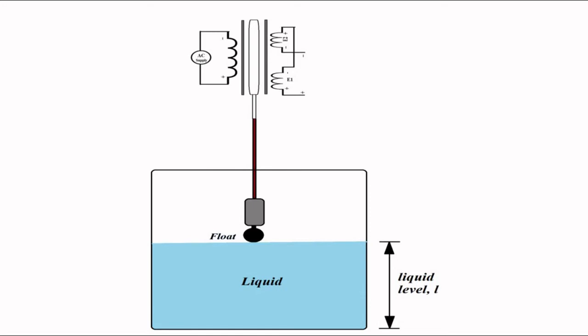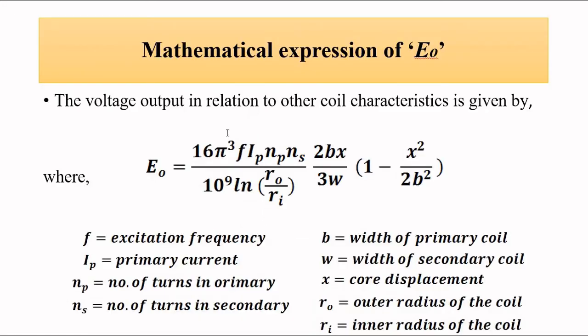The output voltage value can be determined as per this mathematical formula, which is a bit complicated. It is given by 16π³f·ip·np·ns / [10⁹·ln(r₀/rᵢ)] · (2bx)/(3w) · (1 - x²/(2b²)). It is not necessary to remember this formula, but just if you want to have an understanding about it.